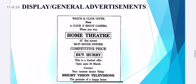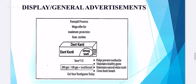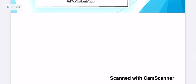Here are a few examples of display advertisements. You can see a watch-and-click offer: 'A click-in-and-shoot camera — when you buy a home theater, 31-inch flat screen, hi-fi sound system, competitive price — but hurry, this is a limited offer.' This is the advertisement of a television. Here is Patanjali products with different products the manufacturer wants to sell, and here's the advertisement of Dant Kanti. For display advertisement, do not copy anything — just go through this PowerPoint presentation and focus on your classified advertisement.